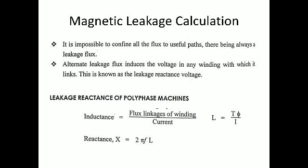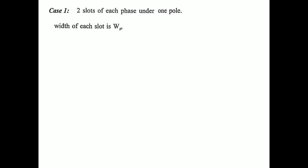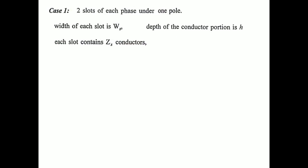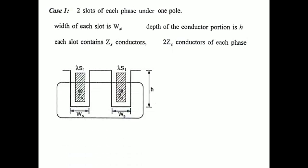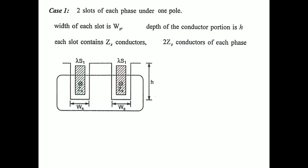For this consideration we go into two cases. Case 1: two slots per phase per pole — meaning one pole has two slots. The descriptions are: W_s = width of the slot, h = depth of the slot, Z_s = conductors per slot, and 2·Z_s = conductors per phase. The diagram shows one pole formed by two slots, each slot having width W_s and depth h.